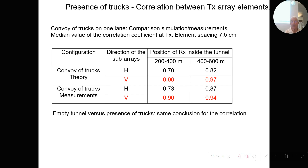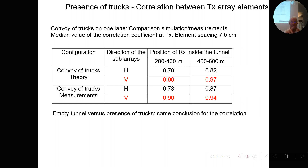In the presence of trucks — a convoy in one lane — we compare simulation and measurements of the correlation. For elements on the horizontal line, theory gives 0.7 while measurements give 0.73, showing good agreement. Comparing vertical and horizontal lines, we obtain the same conclusion as in the empty tunnel: the correlation is very high on the vertical line, due to the rectangular shape of the tunnel.